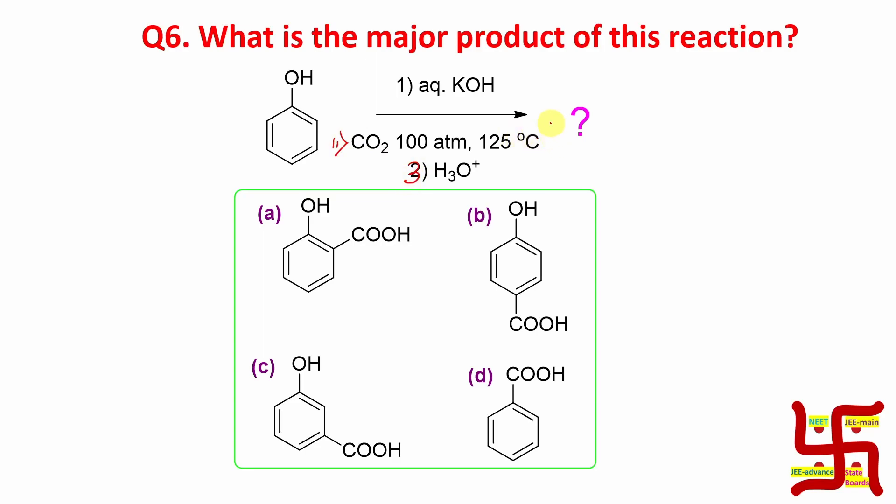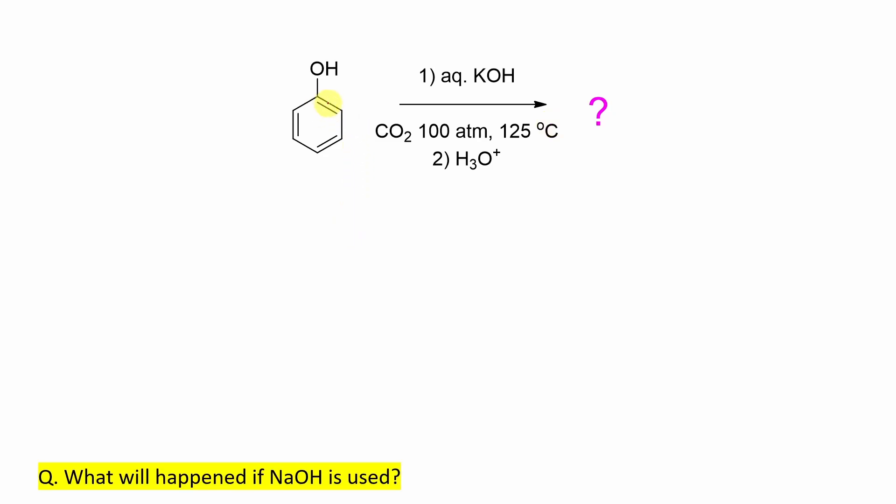If you take phenol treated with aqueous potassium hydroxide, let's go stepwise. First, an acid-base reaction occurs. We know phenol is weakly acidic, so it will react with a strong base like KOH and produce potassium phenoxide salt. Point number one.